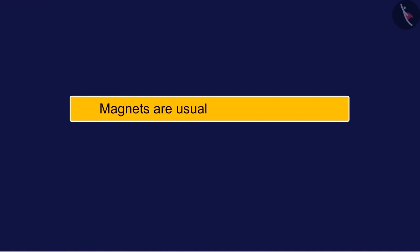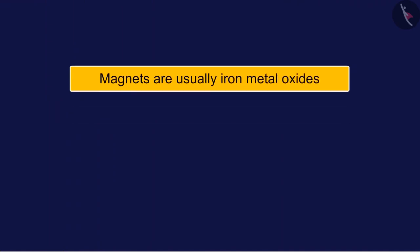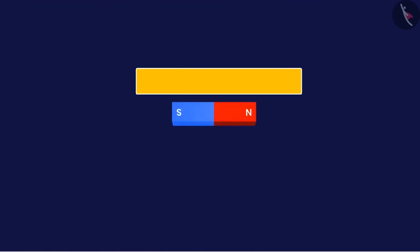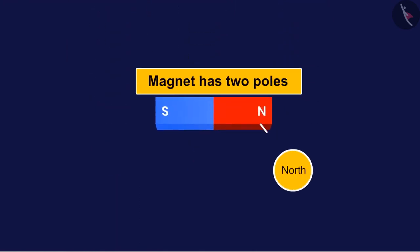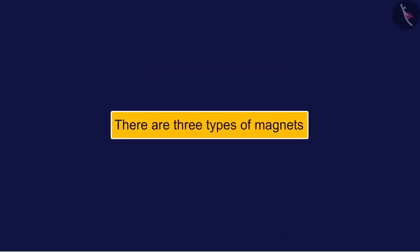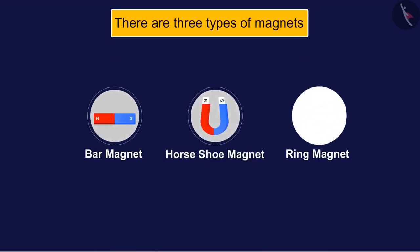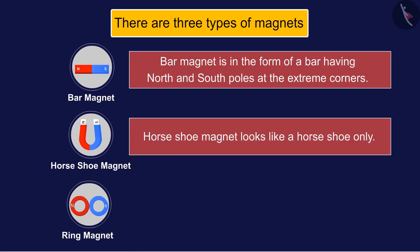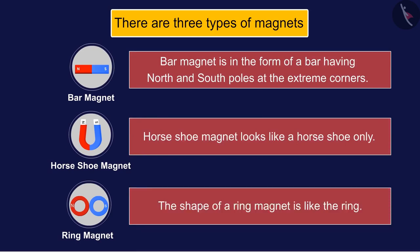Magnets are usually iron metal oxides that attract certain metals such as iron, cobalt, and nickel. A magnet has two poles: the north and the south. There are three types of magnets — bar magnet, horseshoe magnet, and ring magnet. A bar magnet has north and south poles at the extreme ends. A horseshoe magnet looks like a horseshoe, and a ring magnet is shaped like a ring.